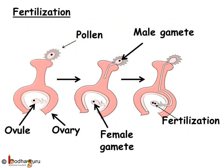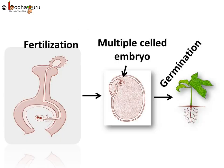We already know about the fertilization in plants. After pollination, the male gamete in the pollen grain travels to the ovary and fuses with the female gamete inside the ovule to form a zygote.